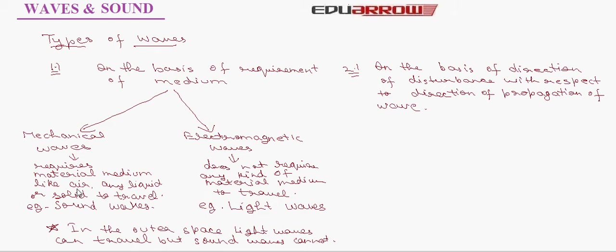Electromagnetic waves are the waves which does not require any kind of material medium to travel. Example, light waves. In the outer space, light waves can travel but sound waves cannot.